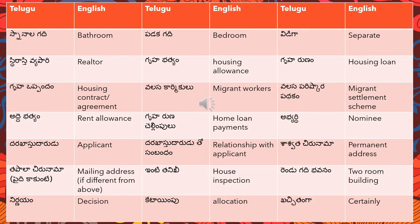'Abhyabhya' means nominee. In a bank context, they will ask who the nominee is and you should mention one. So 'abhyabhya' is a nominee. 'Darkhastu darudu' means applicant.